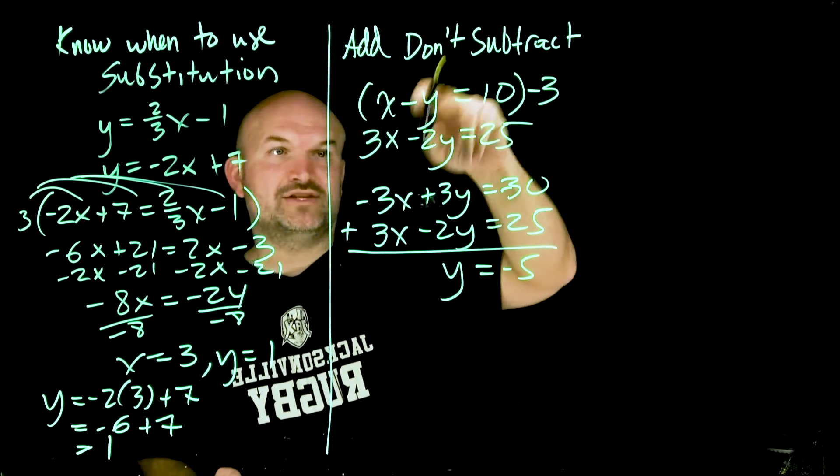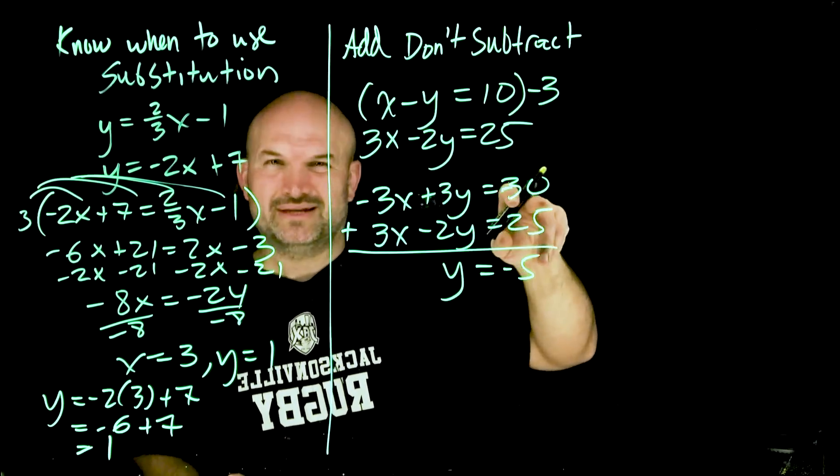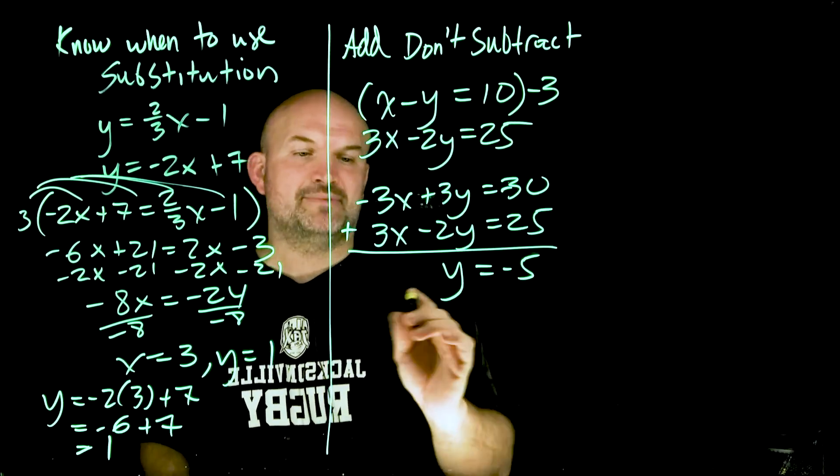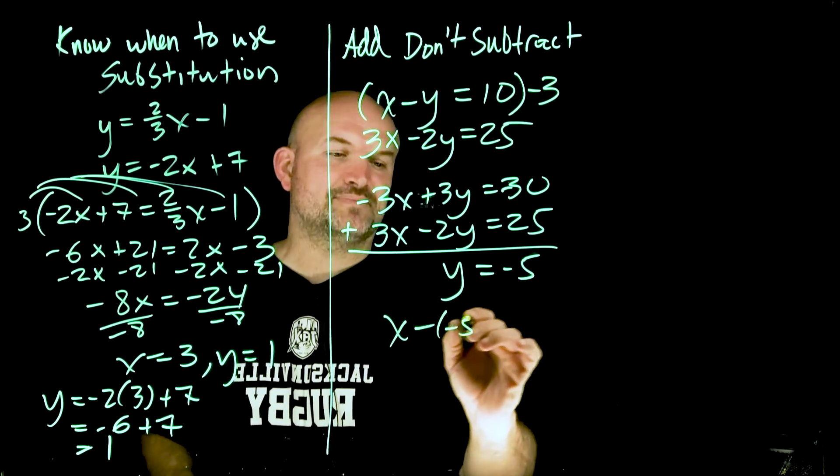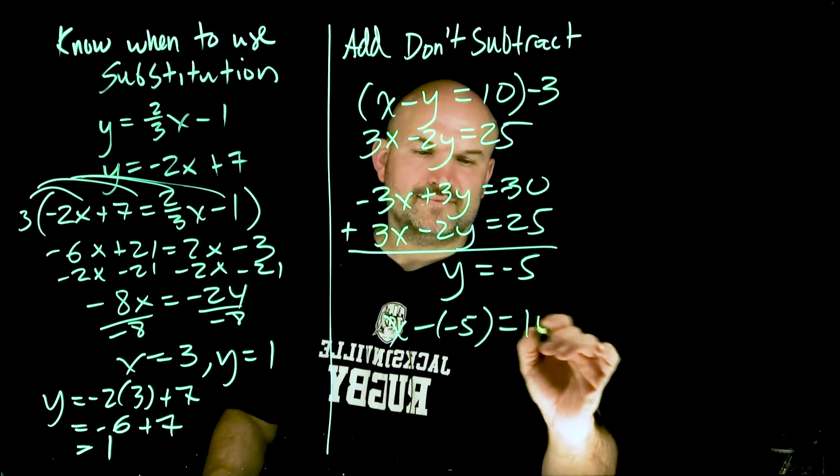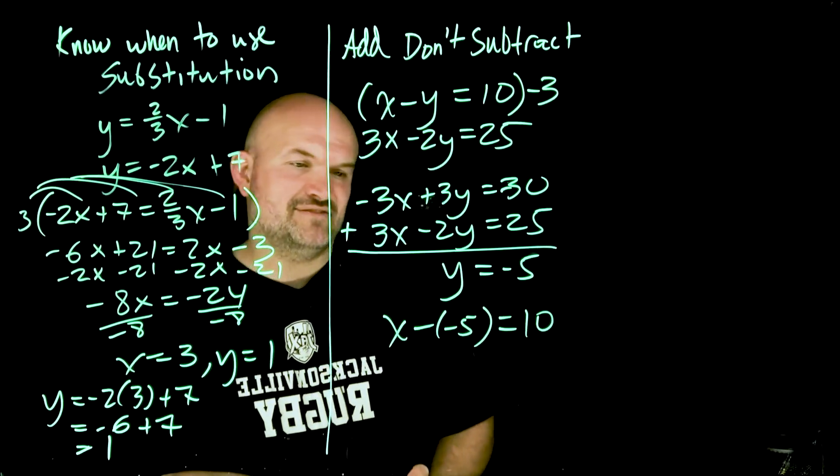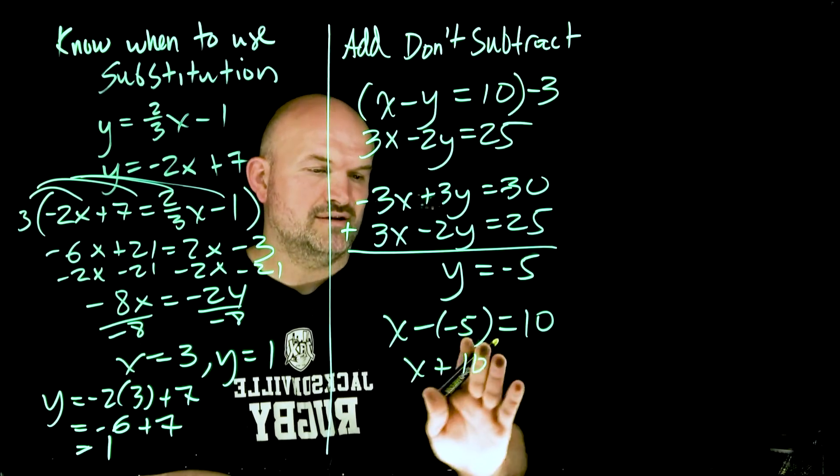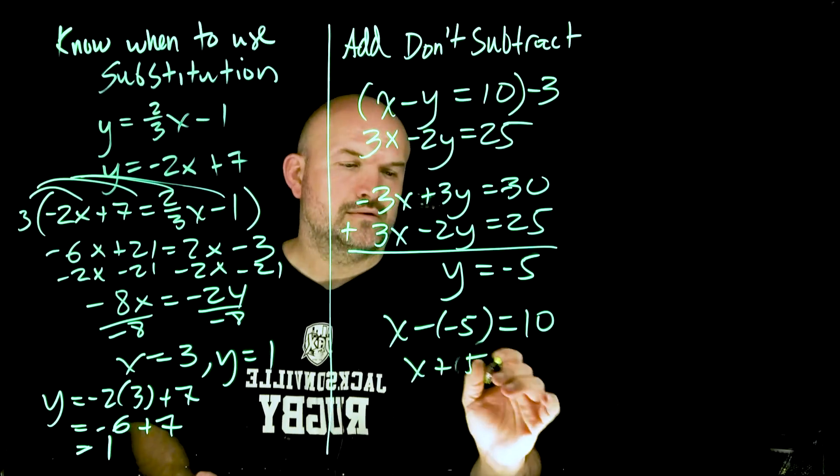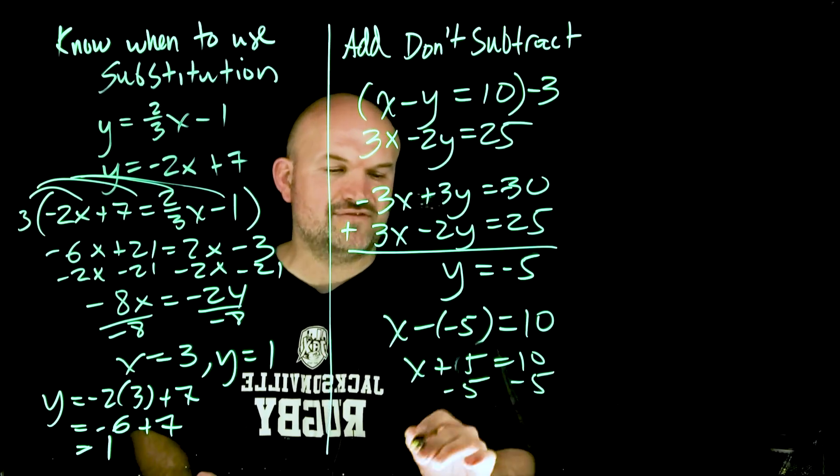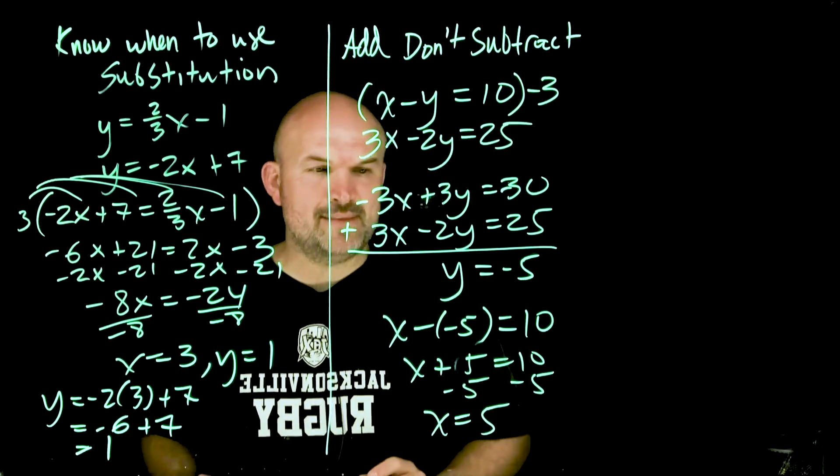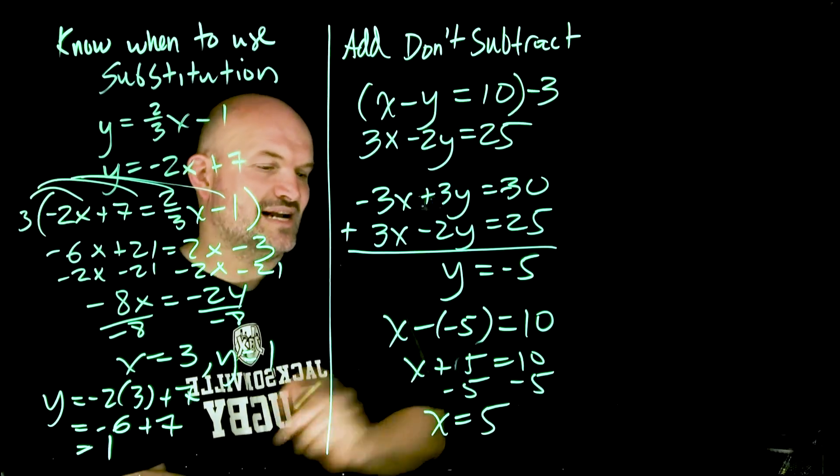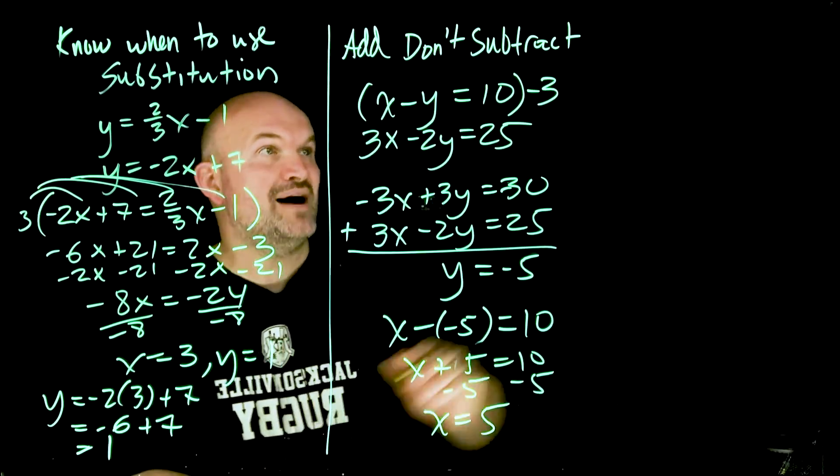All right so now I have y = -5. I can plug that into either one of these equations. You don't want to plug it into one of these. You want to plug it into the most simple equation which in my opinion would be the top. So I have x - (-5) = 10. Minus -5 is going to be +5. So that'd be x + 5 = 10. And then subtract 5, subtract 5. x = 5. So therefore my solution for this system equation is y = -5 and x = 5.